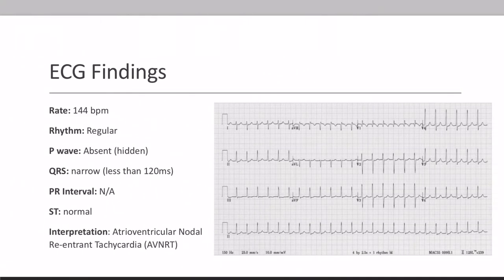Just a recap of our findings: the rate was between 140 and 150 bpm — spot on with the measured 144. The rhythm is regular. P waves are absent and are probably just hidden — we'll come back to this later. The QRS complex is narrow, less than 120 milliseconds. There is no PR interval, and the ST segment was normal. Our interpretation of this strip is atrioventricular nodal reentrant tachycardia, or AVNRT.